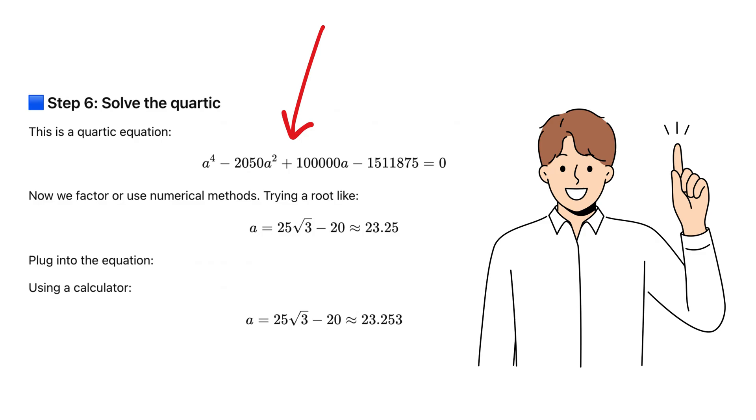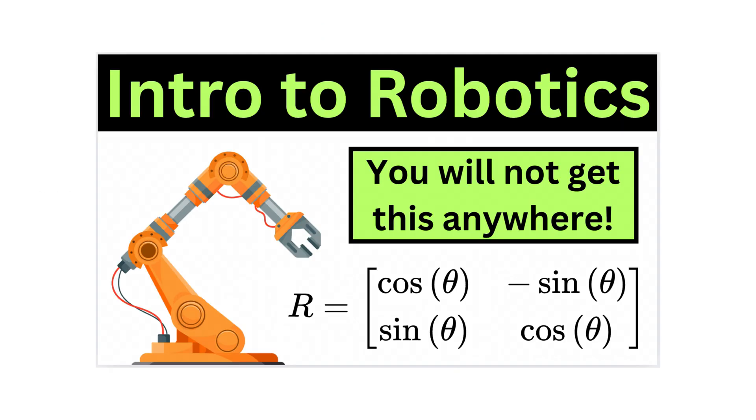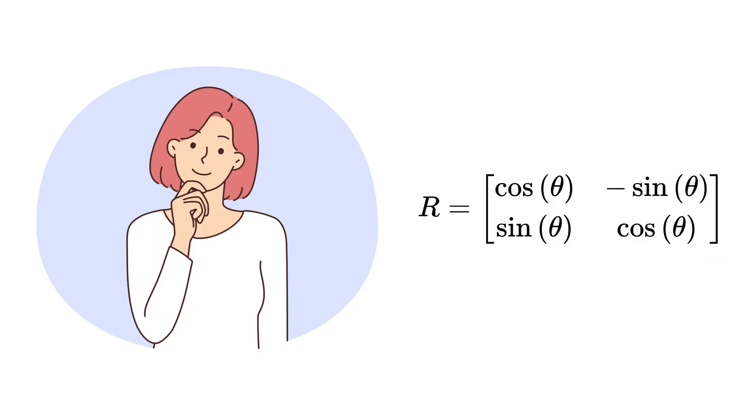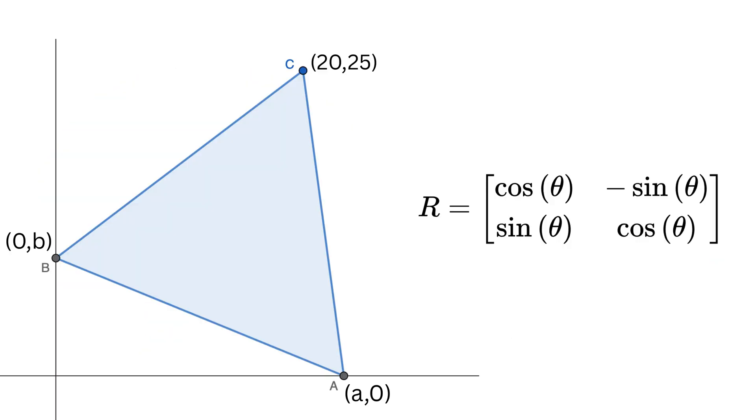A few days back, I made a video on robotics where I explained the concept of rotation matrix. That idea stuck with me, and as I looked at this triangle with coordinates, I thought, what if we just rotate point C instead of solving the quartic equation? Let us see what happens.